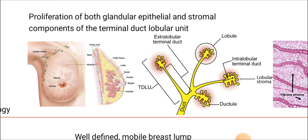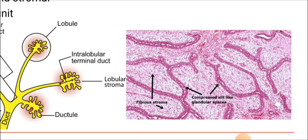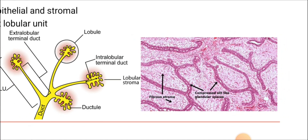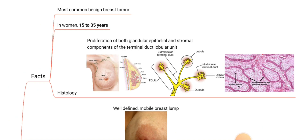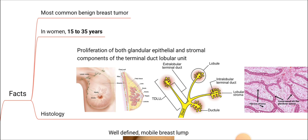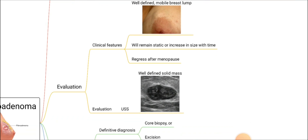Fibroadenoma occurs with proliferation of both glandular tissue and stromal components in the terminal duct lobular unit. In the histologic view, the dark-colored cells are the glandular tissues and the pale-colored ones are the stromal tissue, so proliferation of both tissue types is present in fibroadenoma. For MCQs, you should know it is the most common benign breast tumor, prevalent in the 15 to 35 age group, and histologically shows proliferation of both glandular epithelial and stromal components of the terminal duct.